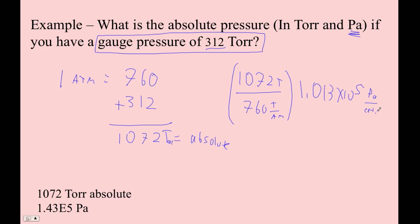So 1072 divided by 760, multiplied by 1.013 times 10 to the fifth.